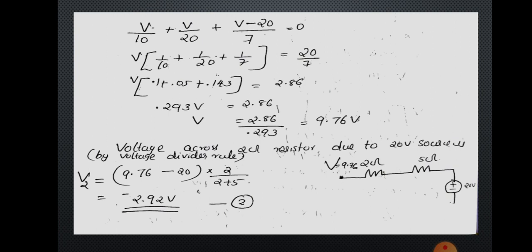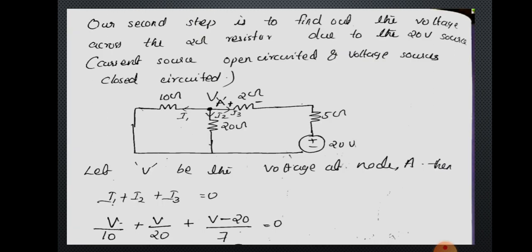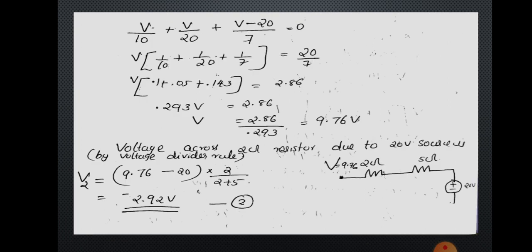With node voltage V = 9.76 volts, find the voltage across the 2 ohm resistance. The branch contains 2 ohm and 5 ohm in series, with one end at node voltage 9.76 volt and the other end connected to 5 ohm which is connected to the 20 volt battery. The voltage across 2 ohm is calculated by voltage divider rule using the differential voltage.